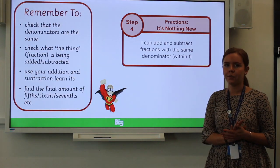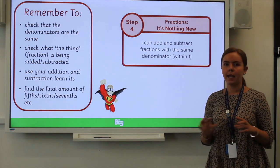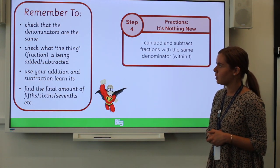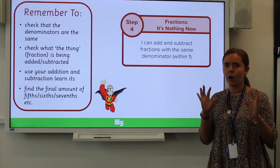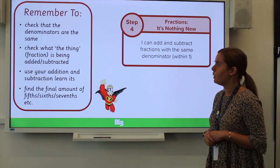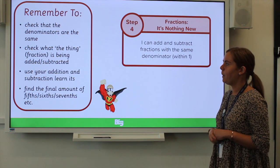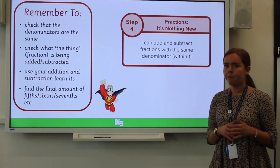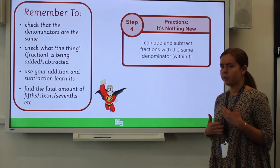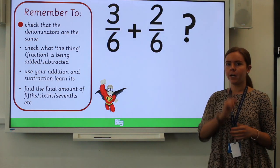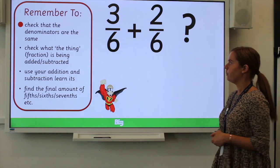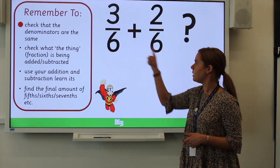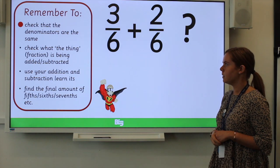Our final part of this lesson is going to be adding and subtracting fractions with the same denominator. There are four steps: first, check that the denominators are the same; second, check whether the fraction is being added or subtracted; third, use your addition and subtraction knowledge; and finally, find the final amount. The denominators are both six, so they are the same. We have an addition sign, so we are adding these fractions.